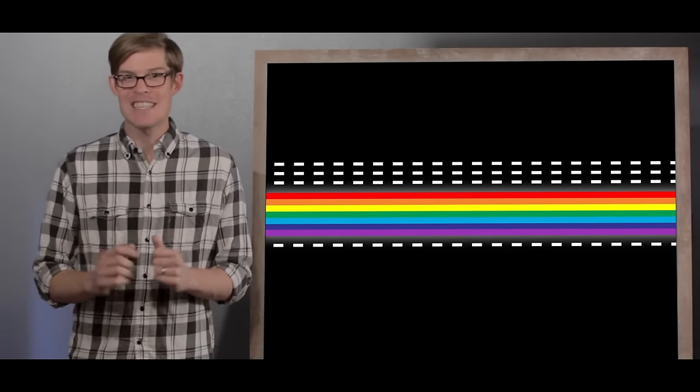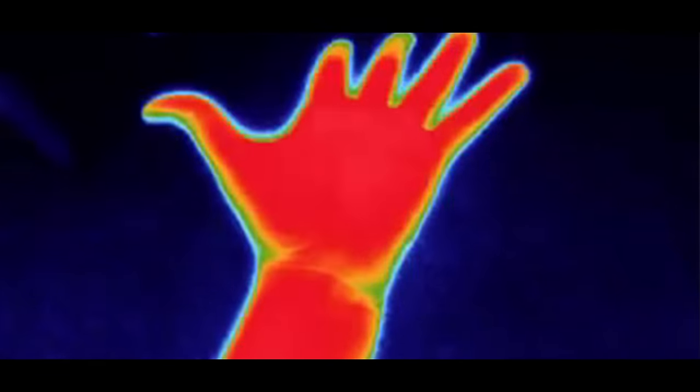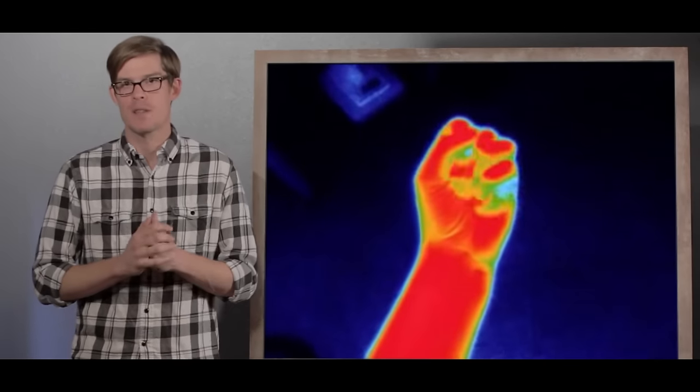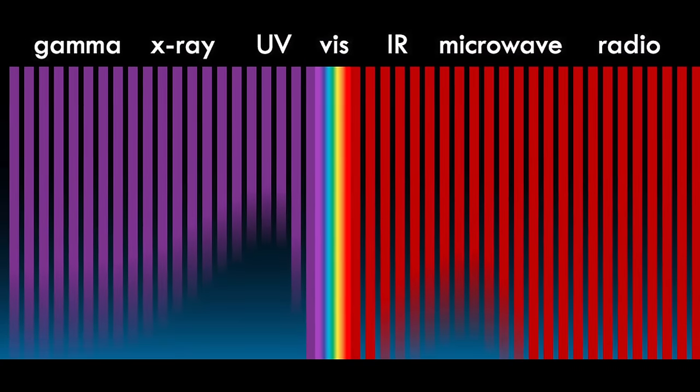Unfortunately, if we could see infrared, we'd be blinded by the infrared radiation emitted by all the warm things around us, including the Earth itself. And turning up the sun wouldn't work either.